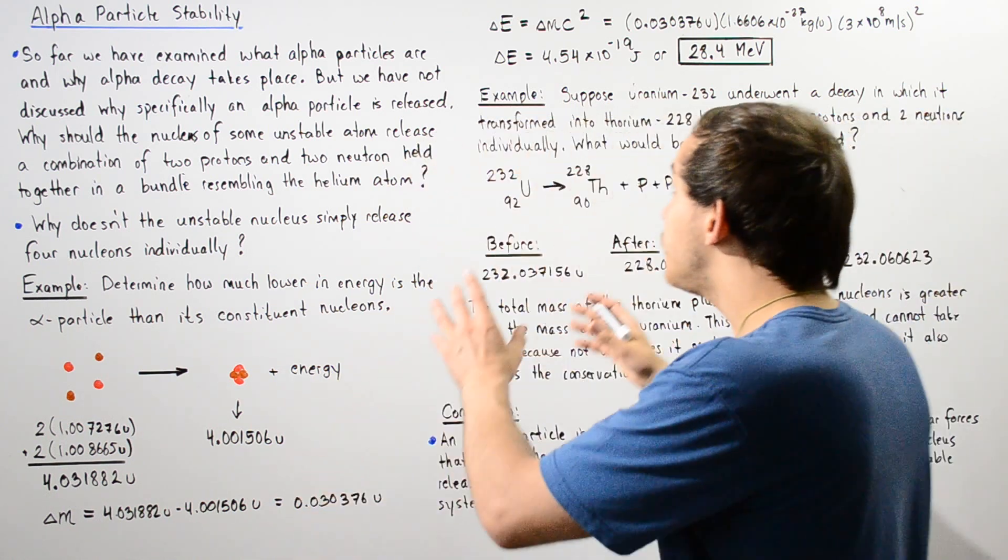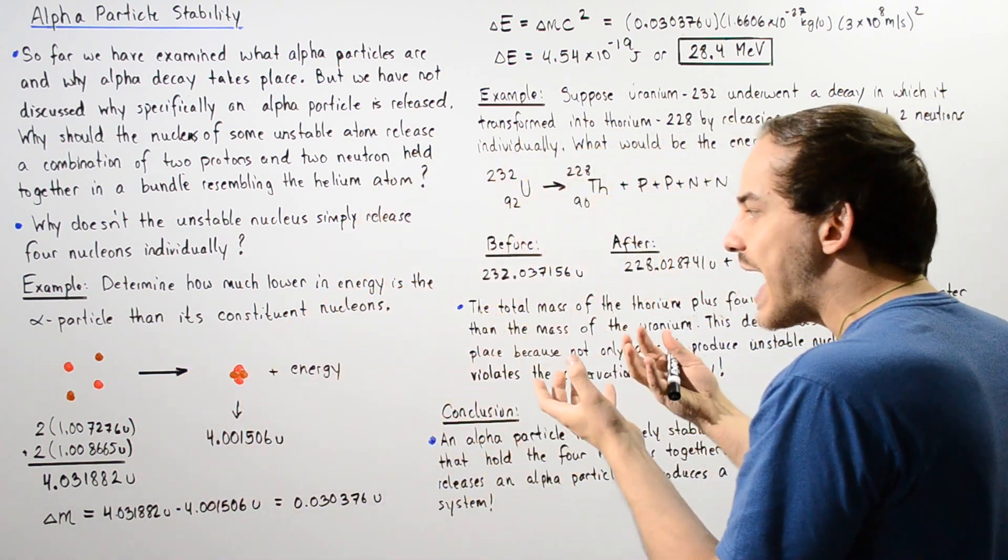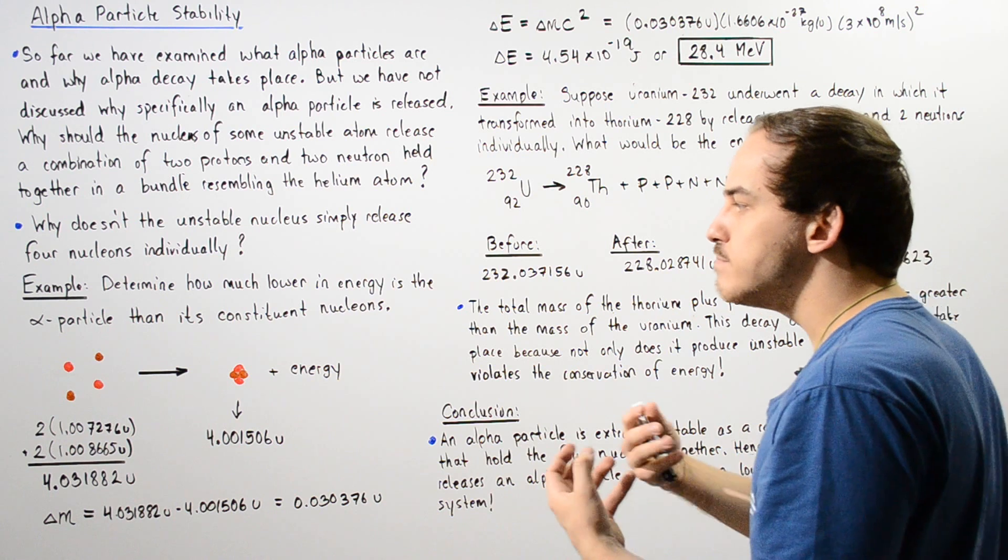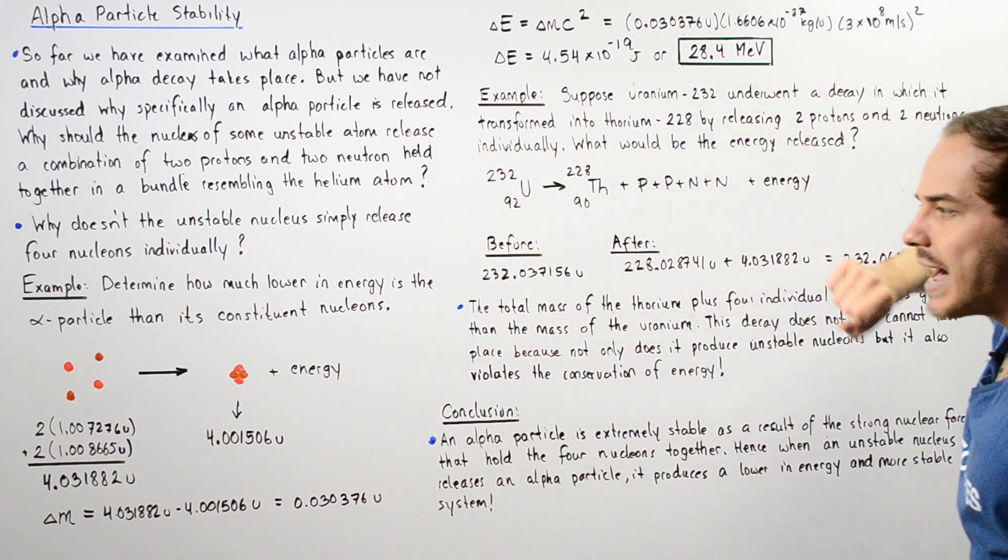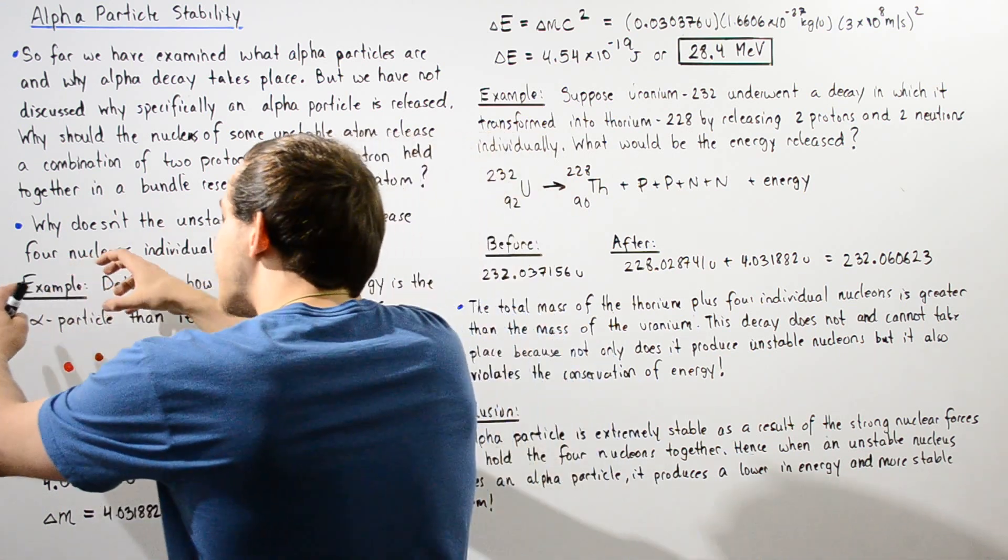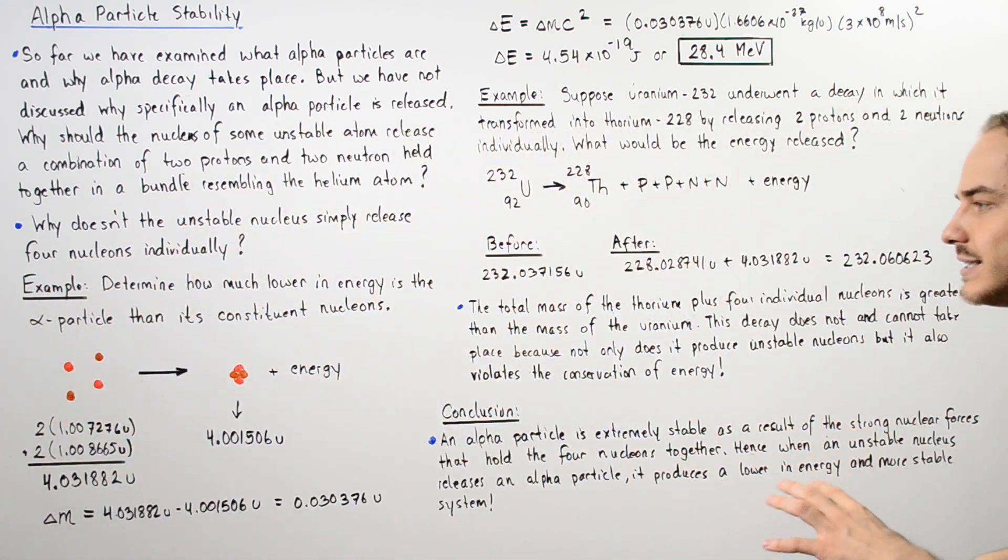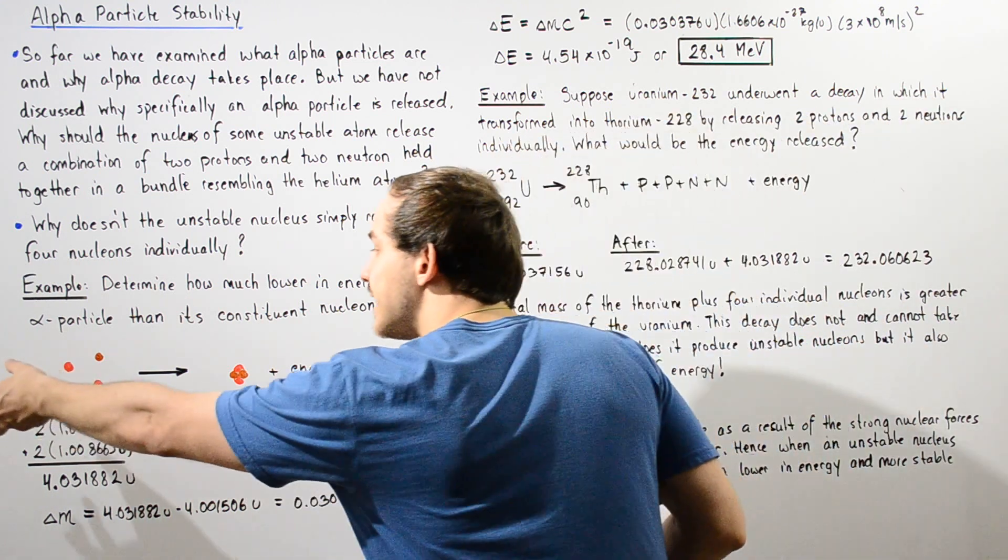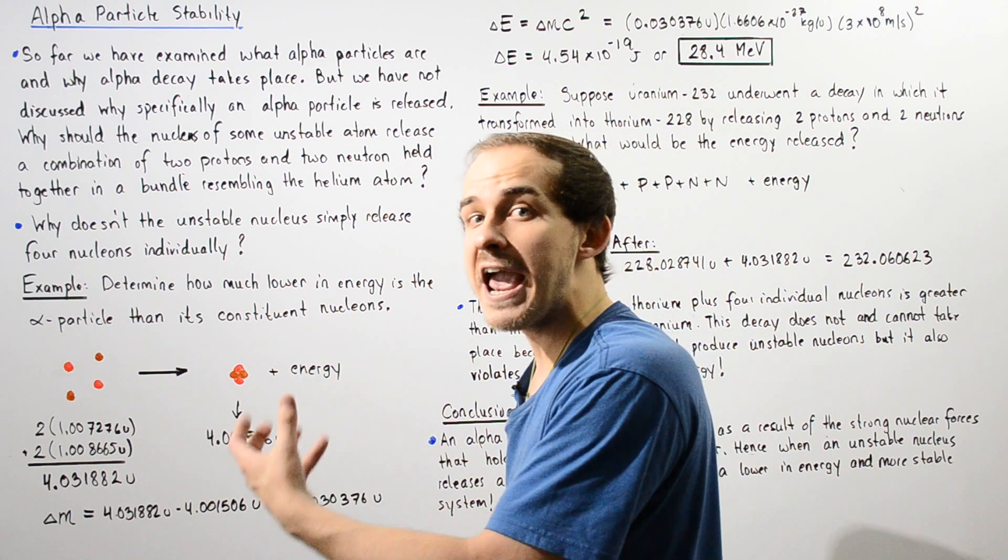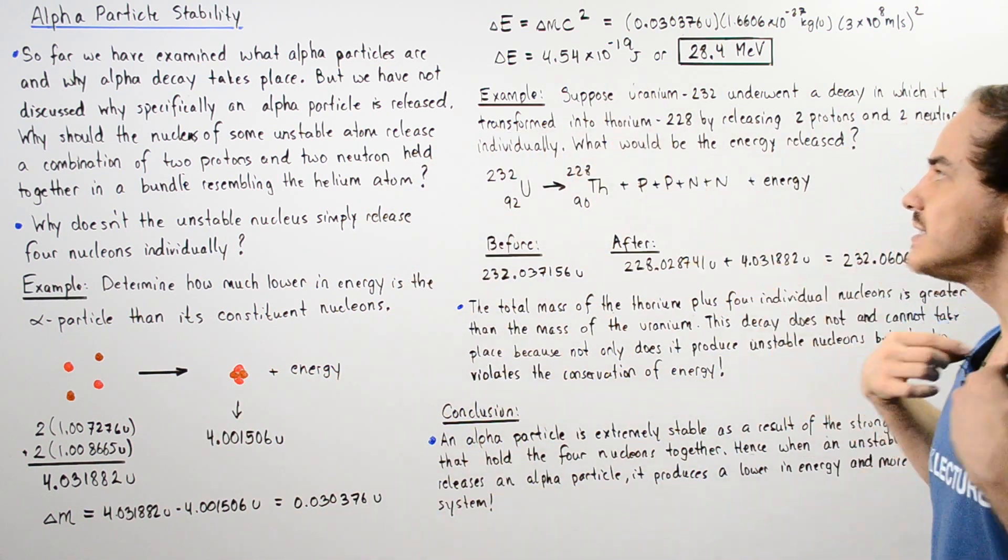So what this basically tells us is that this bundle called the alpha particle is actually more stable and lower in energy by this amount if compared to the individual four nucleons that are not bonded together by strong nuclear forces. So we see this is in fact a very favorable reaction. Now, let's move on to this example.